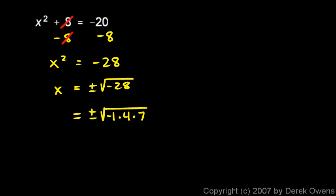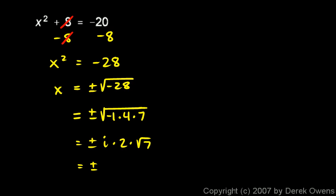4 times 7 is 28. I found my -1 which when I take the square root gives me an i, and I found the 4 which when I take the square root gives me a 2. So this is going to be plus or minus i times 2 times the square root of 7, and we would typically write that as plus or minus 2√7·i, putting the coefficient first and the i at the end. So our two answers are positive 2√7·i and negative 2√7·i.